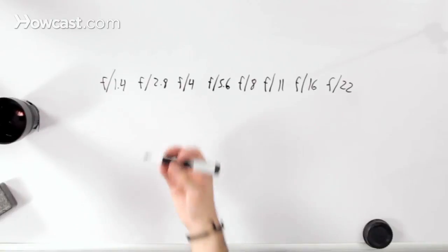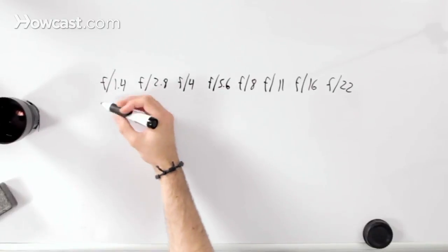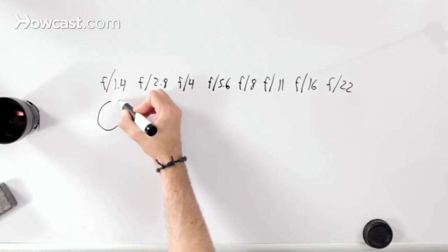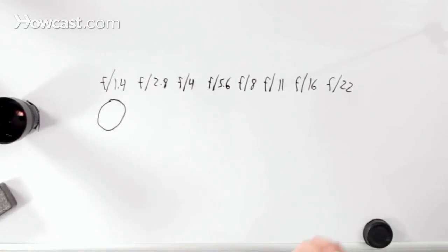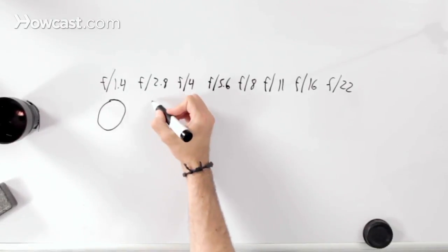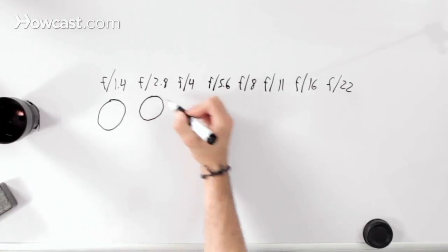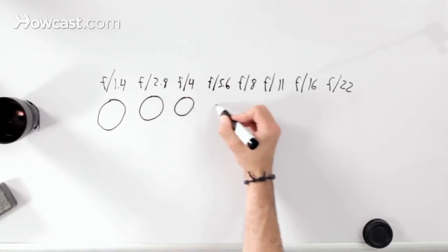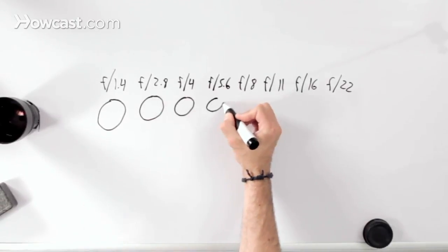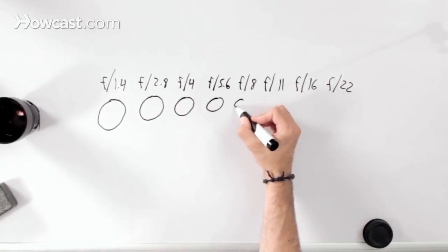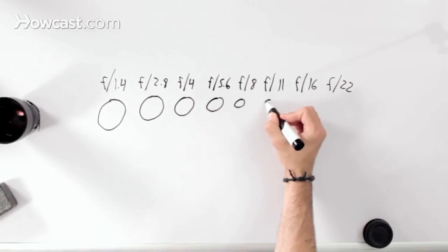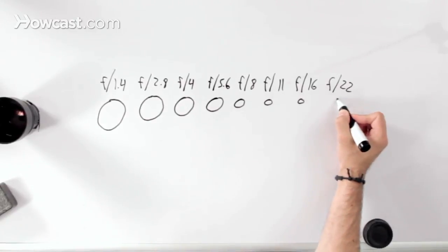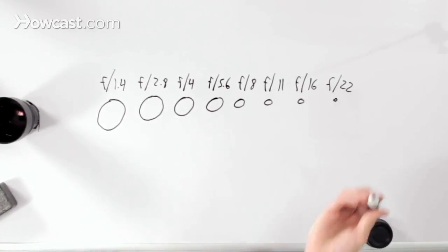F1.4 is going to look something like this — it's going to be completely open. At f2.8 it's going to be a little bit smaller. F4 a little bit smaller. F5.6 a little bit smaller, and so on until you get to around f22 where it's a really tiny opening.